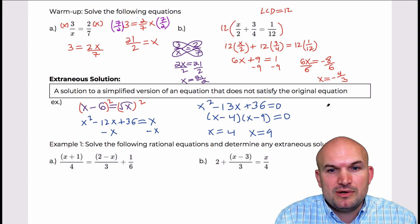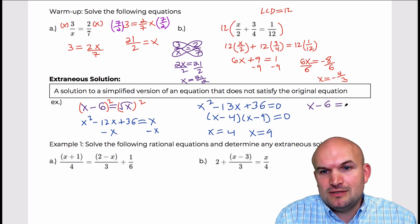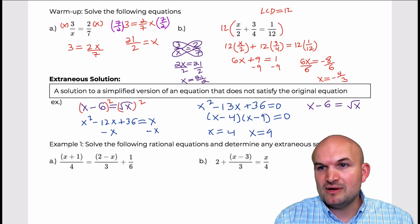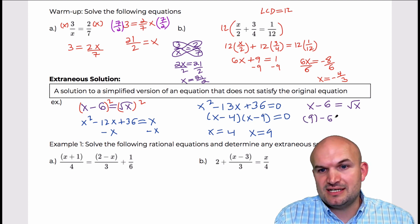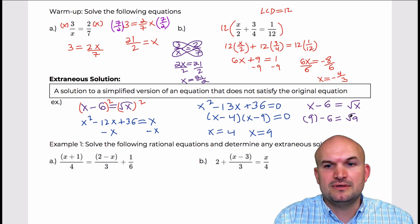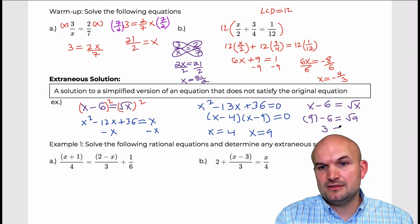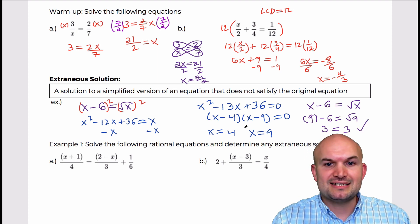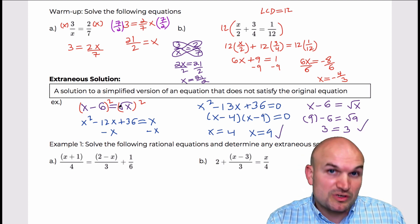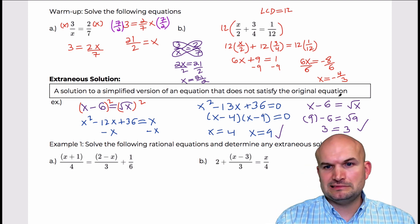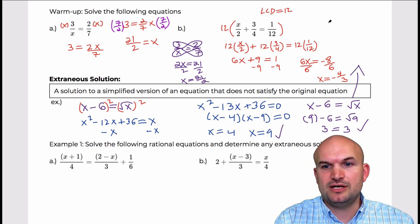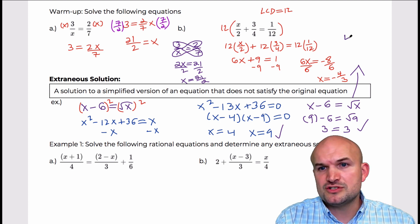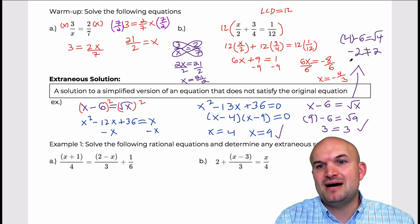So the only way to do that is to go back and plug them back in to test it. So let's do x minus 6 is equal to the square root of x. So now if I go ahead and plug in 9, so let's take our one solution, 9, so I do 9 minus 6 is equal to the square root of 9. And what we see here is 9 minus 6 equals 3 is equal to 3. So therefore, x equals 9 is a solution to this original equation because it makes it true.